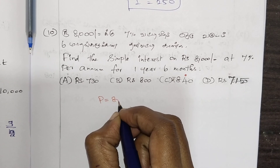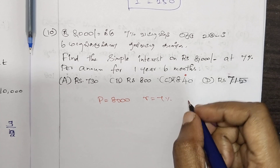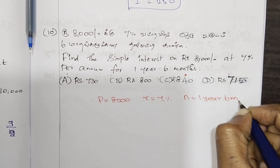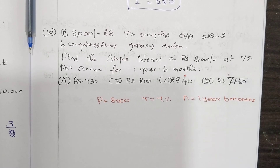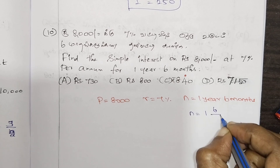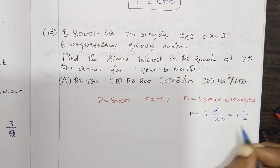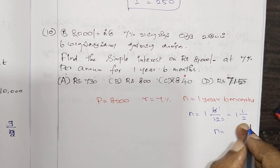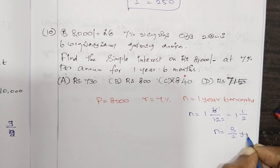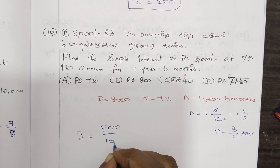Principle amount is 8,000. Rate of interest is 7%. N is 1 year 6 months. If you think of it in years, N equals 1 year plus 6 months, which is 6 by 12, giving 1 and 1/2. As a proper fraction: 2 into 1 plus 1 equals 3, so N equals 3 by 2 years.